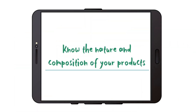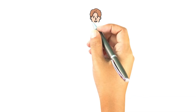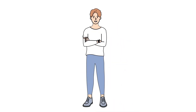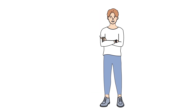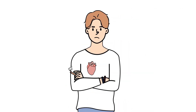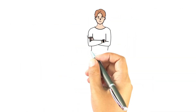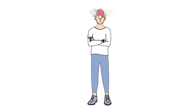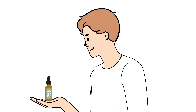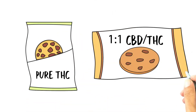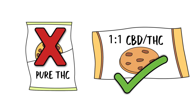Know the nature and composition of your products. High THC concentration is associated with increased adverse effects, including tachycardia or elevated heart rate, impaired cognitive function and coordination, and reproductive challenges. On the other hand, CBD has been shown to protect the nervous system and relieve pain and inflammation. Consumers should ideally use products with lower THC concentrations and high CBD to THC ratios.